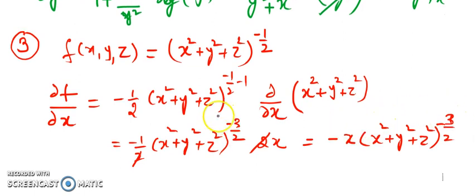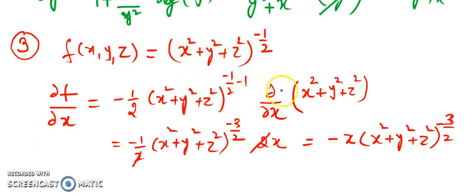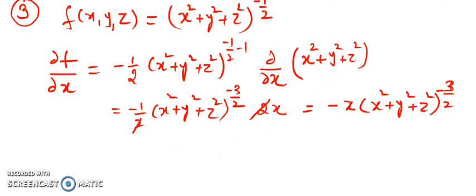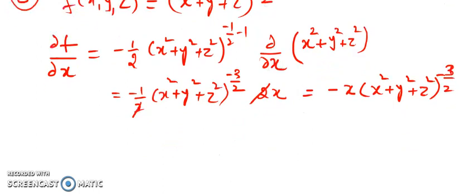I want you to do the other two yourself, because it is symmetric. Whatever we have done for x², the same you will do for y — and when you do for y it is 2y — and when you do for z it is 2z. So the other two parts you can do because it is exactly the same.